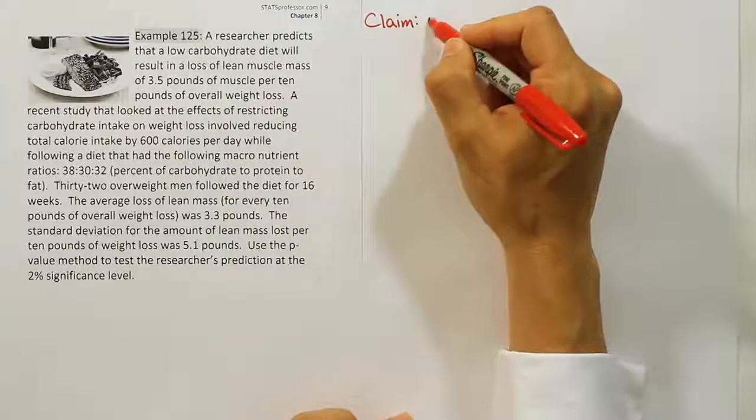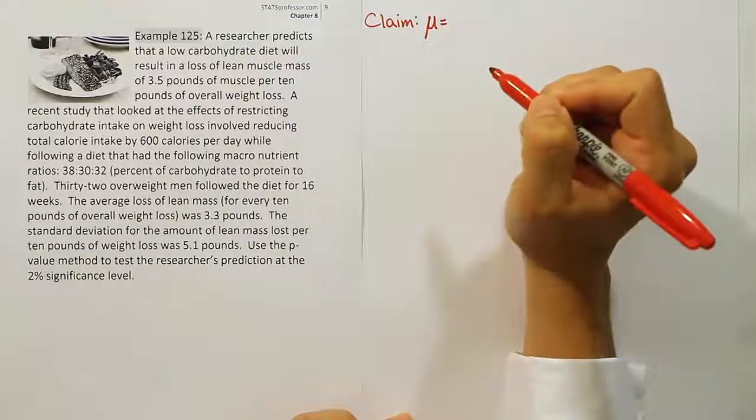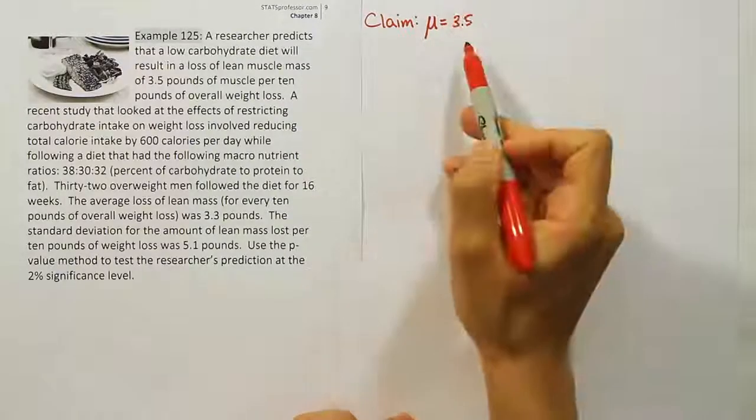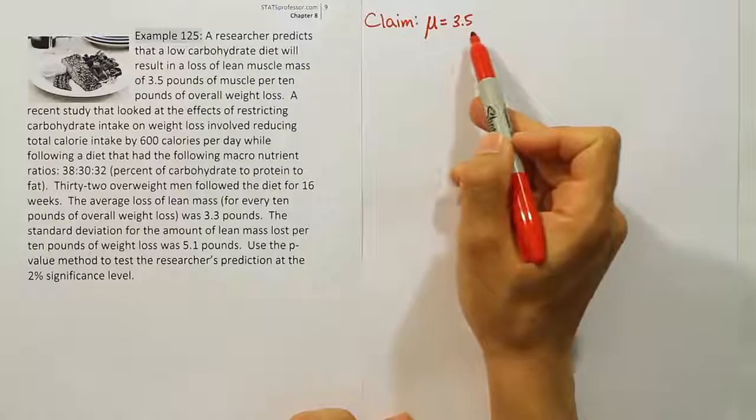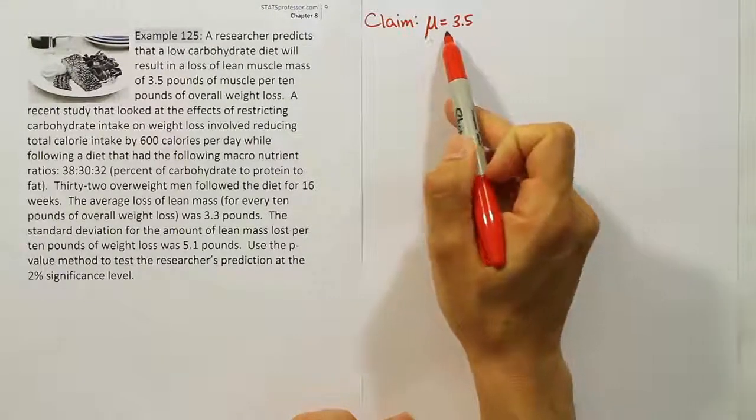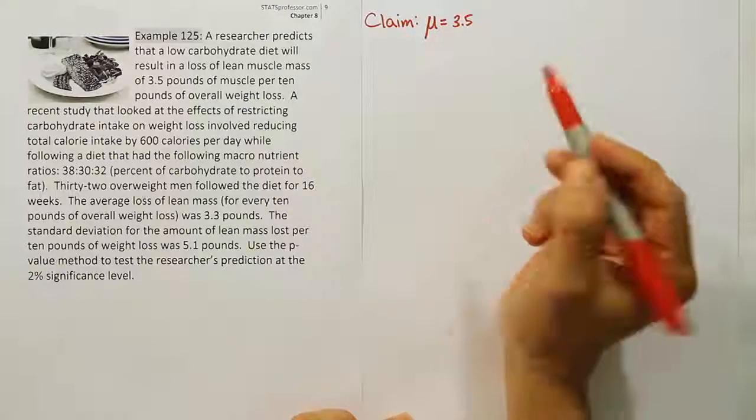He's saying the average loss for every 10 pounds of weight lost in the diet is equal to 3.5. This is the average loss of lean muscle mass for every 10 pounds lost due to the diet. So the claim is μ = 3.5.